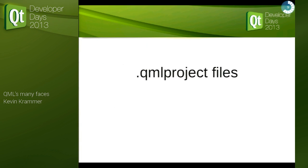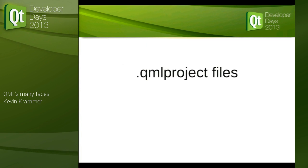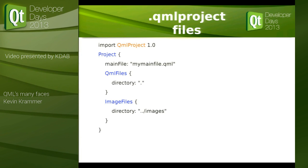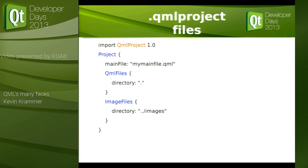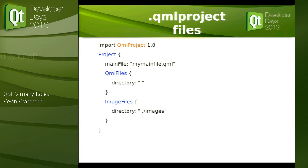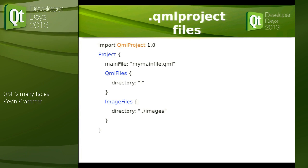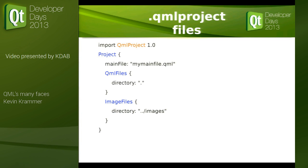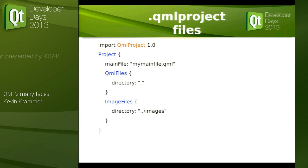One thing also used by Qt Creator, for example, are QML project files. QML project files are QML files themselves. They look like this: we have the common import — we always start a QML file with an import, which defines what the elements are actually referring to. Here we have a project with a property main file, sub-projects like QML files, image files, and so on. Another application of QML.